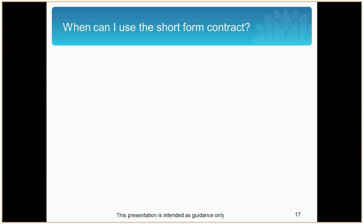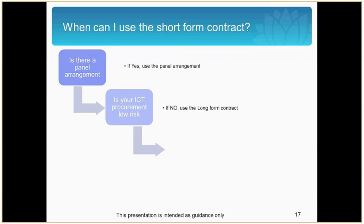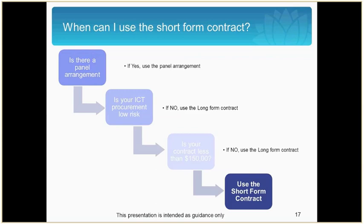There is a distinction between a short form and a long form contract. The first question you need to ask yourself is: is there a panel arrangement for this ICT service? If there is, you must use the panel arrangement. If there isn't a panel arrangement, you need to conduct a risk assessment to find out whether your procurement is low or high risk. If it's high risk, you need to use the long form contract. But if it's low risk, you need to assess that the entire value of the contract is less than $150,000. If it isn't, you must use the long form contract. But if your procurement is low risk and less than $150,000, use the short form contract.